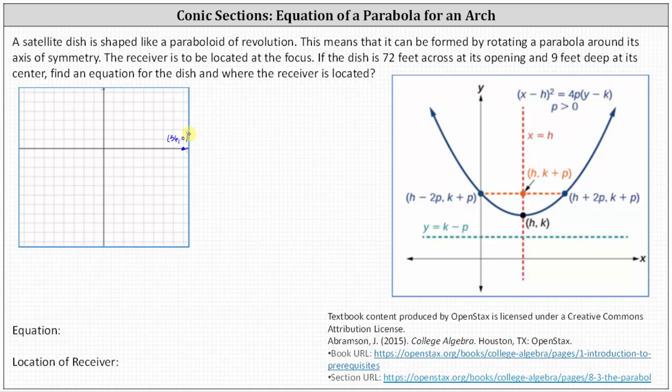And we'll let the x-intercept of (-36, 0) be the x-intercept on the left. Notice the distance between these two points is 72. And because the dish is 9 feet deep, we'll let the vertex be the point (0, -9).